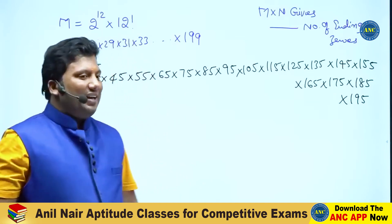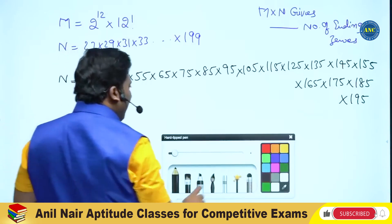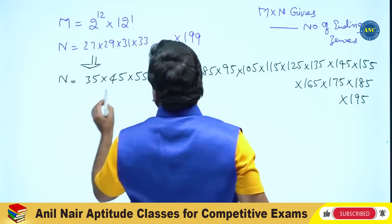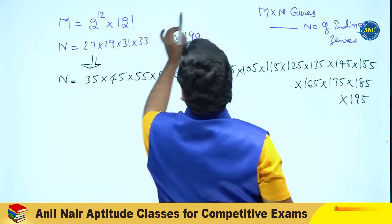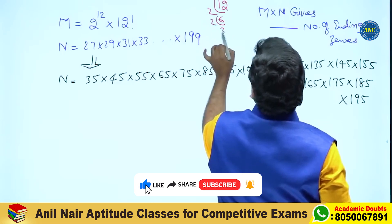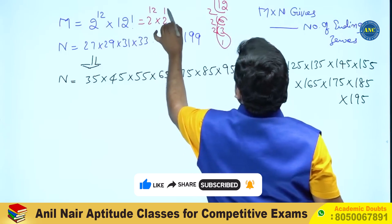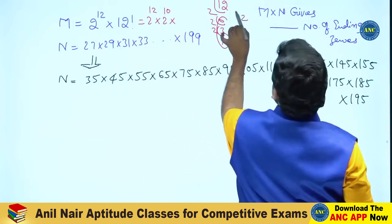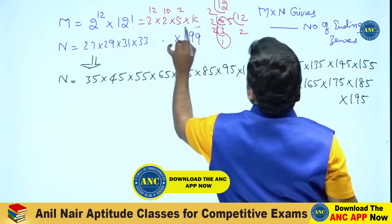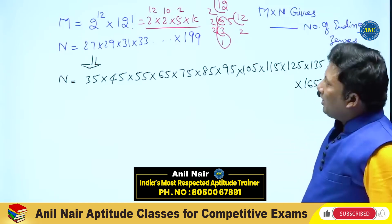M into N gives the number of trailing zeros. For M, which is 2 to the power 12 into 12 factorial: the highest power of 2 in 12 factorial is 2 sixes plus 2 threes plus 2 ones equals 10, so M has 2 to the power 22. The highest power of 5 in 12 factorial gives 5 squared, so M equals 2 to the power 22 into 5 squared into K.